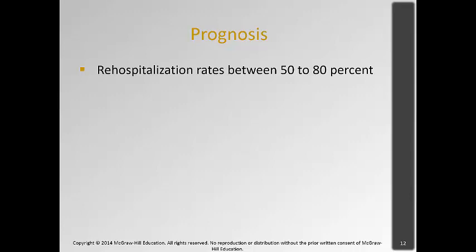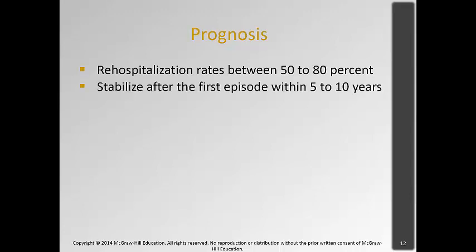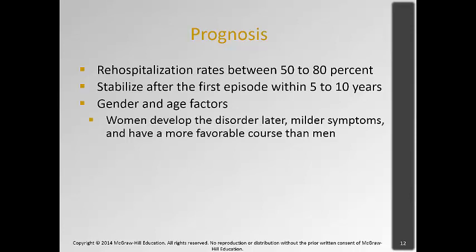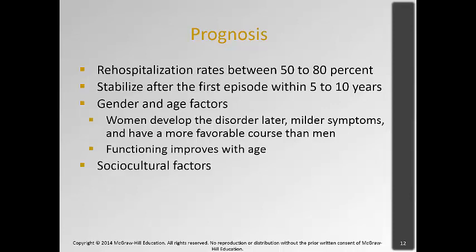In terms of prognosis for schizophrenia spectrum disorder, re-hospitalization is likely at some point, with rates between 50 and 80 percent. People usually stabilize after the first episode within five to ten years, but this is impacted by gender and age. Women tend to develop the disorder later, have milder symptoms, and have a more favorable course than men. Functioning tends to improve with age. Socio-cultural factors also affect how families deal with these disorders — in some developing countries, people are cared for in the home, and those with schizophrenia are sometimes said to have special gifts, with their hallucinations viewed as visions.